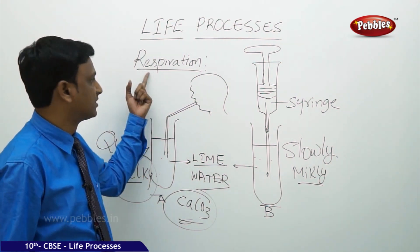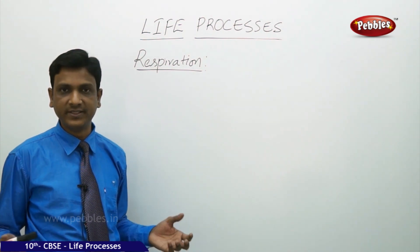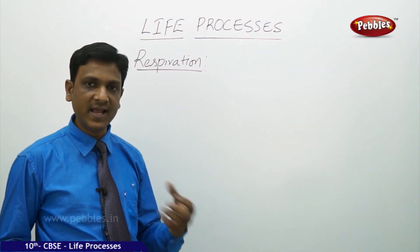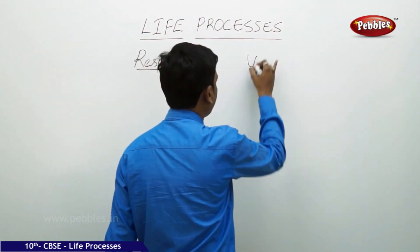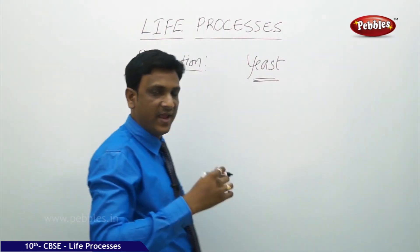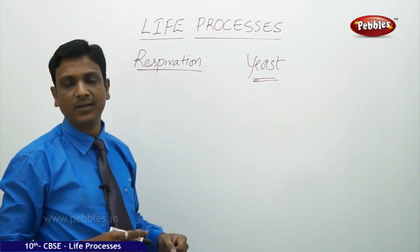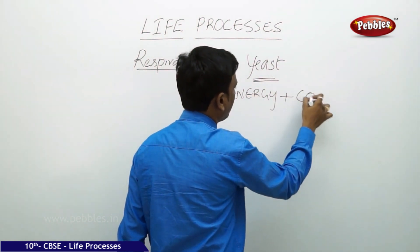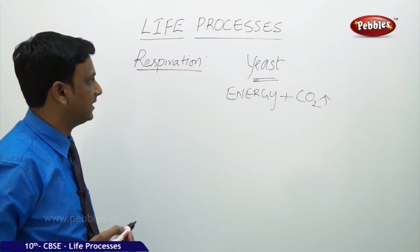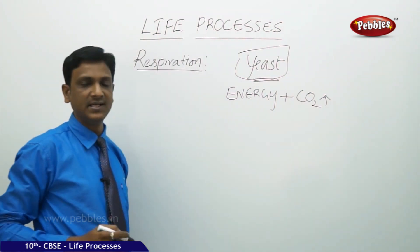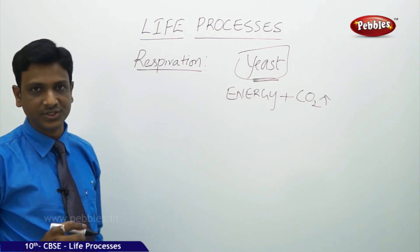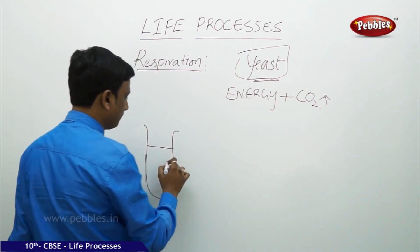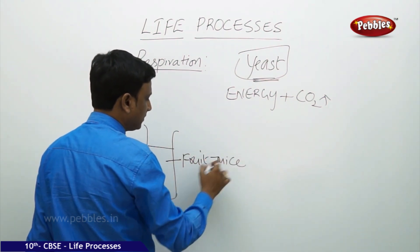Respiration occurs not only in humans or higher animals, but also in simpler organisms. For example, let us take yeast. Although the details of respiration inside cells may differ between yeast and humans, energy is released in respiration and carbon dioxide is also released — these are common to all types of respiration. Let us verify whether carbon dioxide is released in yeast respiration. Take a small container or test tube with some fruit juice or sugar solution.